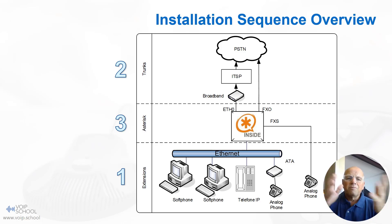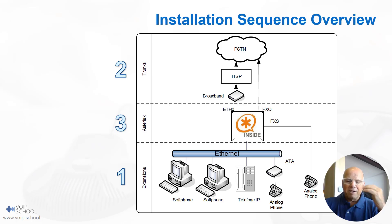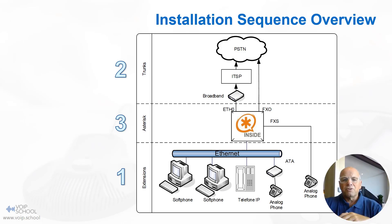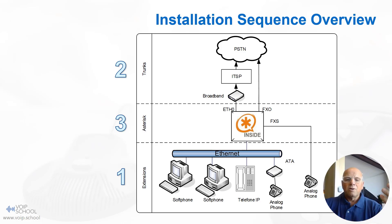This slide provides an overview of the installation sequence for an Asterisk PBX system. At the top we have the trunk layer, then the Asterisk layer, and finally the extensions layer. The best sequence is: start by creating the extensions, make sure they register and connect to your Asterisk server, and verify them in the console. Then move to step two: configure the trunks and make sure you can receive and send calls. Finally, create your dial plan to make and receive calls to and from your service provider and extensions. This is the normal installation sequence for Asterisk.